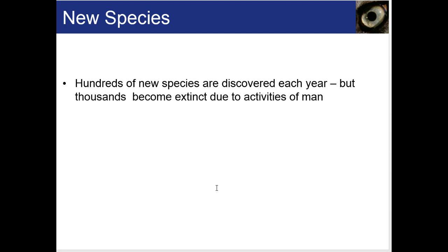Hundreds of species are actually discovered each year, but sadly, thousands become extinct due to our activities. Our book gives us the data that every year about 20 species become extinct every minute in just the rainforest alone — and those are only the ones we know about. That current rate is a thousand times faster than what should be normal for Earth, and it's thought that human activities are responsible for that. As the dominant species on Earth, we need to consider what we can do about it.